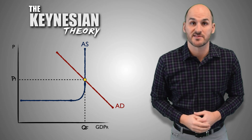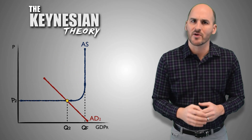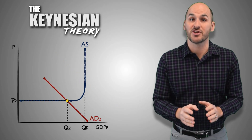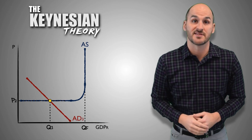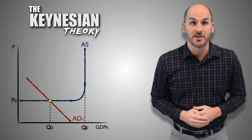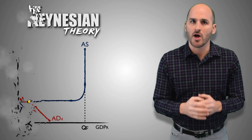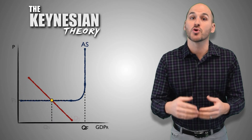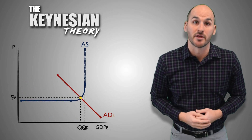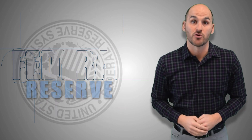According to Keynesian economists, the use of monetary policy is necessary when the aggregate economy is experiencing excessive inflation or economic contraction and the free market fails to correct itself. Without intervention, the economy will spiral out of control and economic conditions will worsen. Using policy correctly can stabilize aggregate demand and return the economy to equilibrium. With monetary policy, that starts with the Federal Reserve.